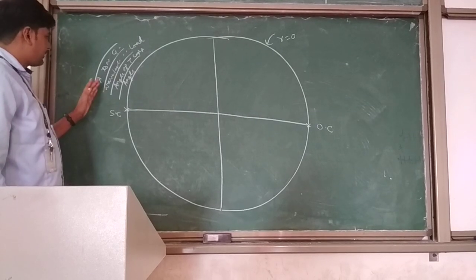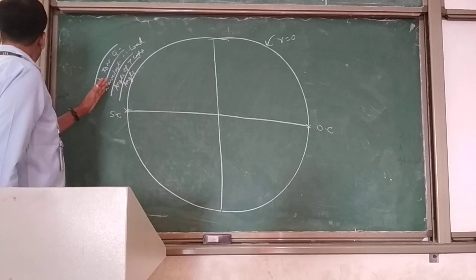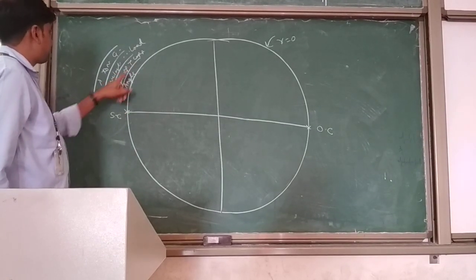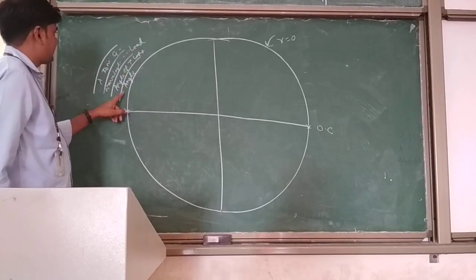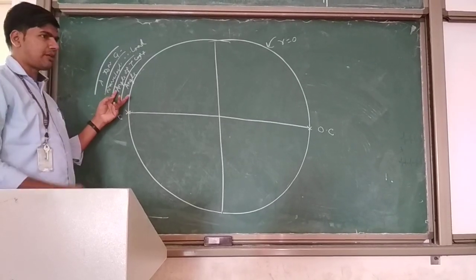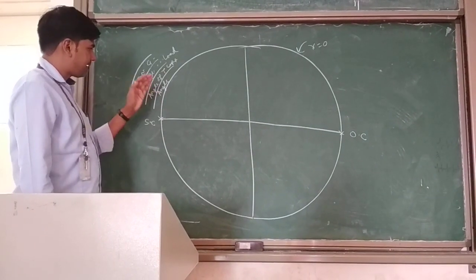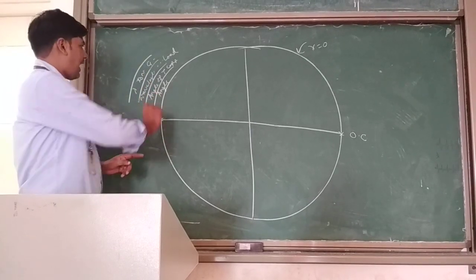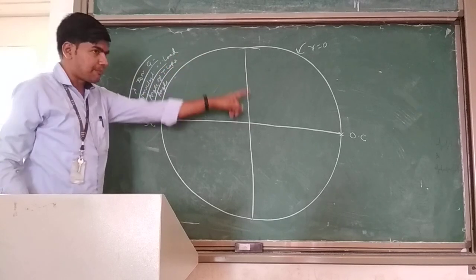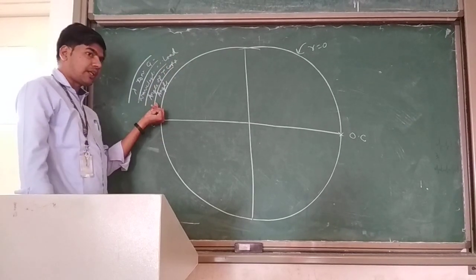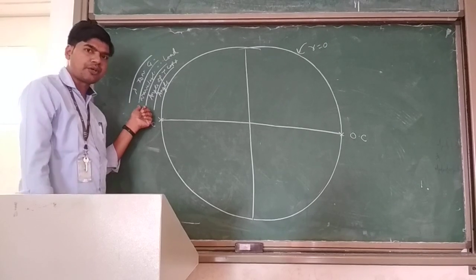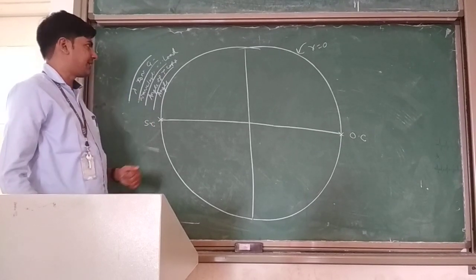These are scales incorporated with the Smith chart. The first scale represents the angle of reflection coefficient or transmission coefficient. It varies depending on the Smith chart. You can look into your Smith chart and it will mention which strip shows the angle of reflection coefficient, angle of transmission coefficient, wavelength towards load, or wavelength towards generator.